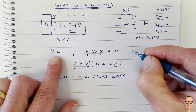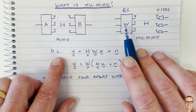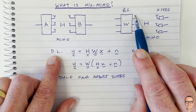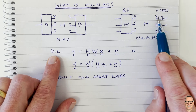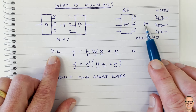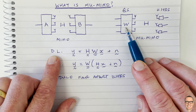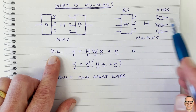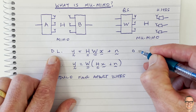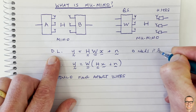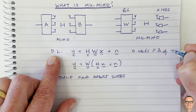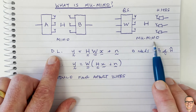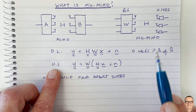Another important consideration in multi-user MIMO is that on the downlink, you need to know the channel at the transmitter. Training data must be sent from the base station antennas to the users; the users estimate the channel and feed back H-hat, the estimate of H, to the base station before it can generate the pre-coder matrix W. So the downlink requires training and feedback of H-hat — that's a critical part of implementing multi-user MIMO.